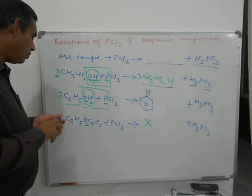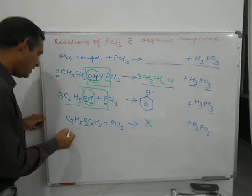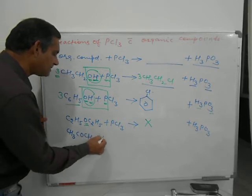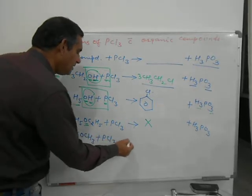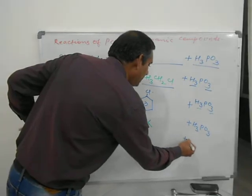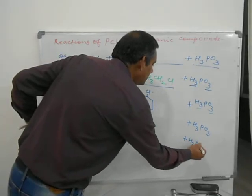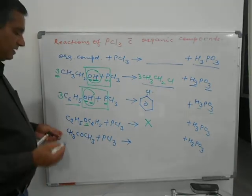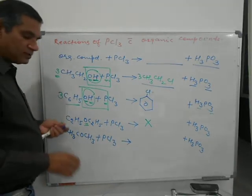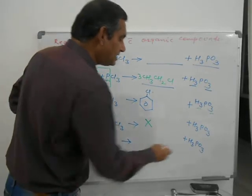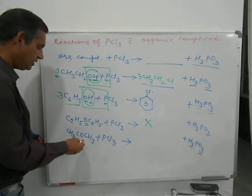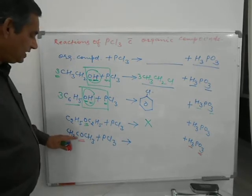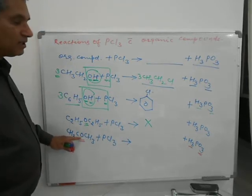Now consider CH3COCH3 (acetone) plus PCl3. What will be the product? Again phosphorous acid H3PO3. But as I have told you so many times, H and O come from the functional group. The functional group in a ketone is C=O, and in this functional group there is no H. So this reaction will also not be possible.